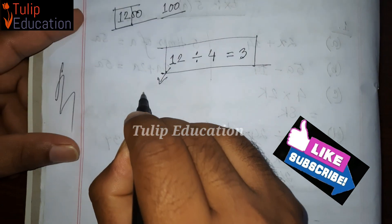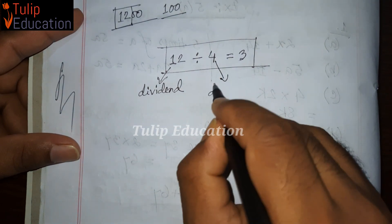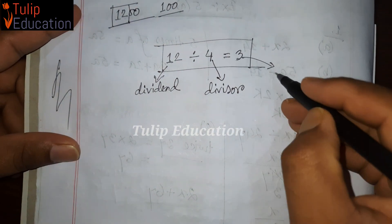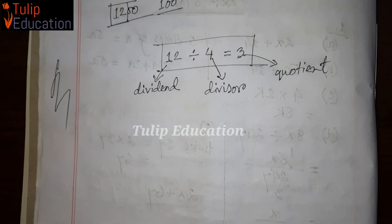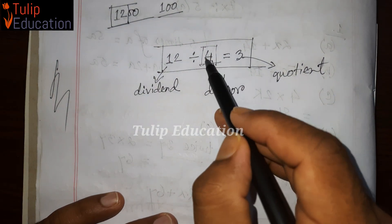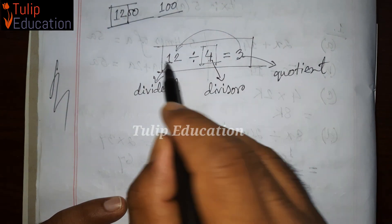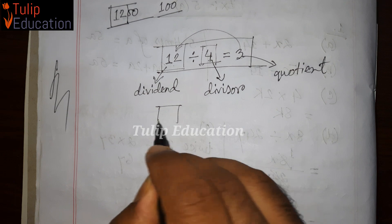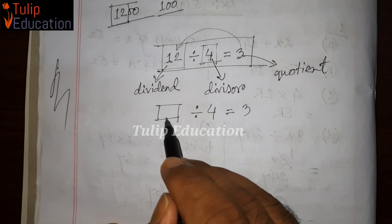Let's discuss division terminology. The number we divide is called the dividend, and the number we divide by is called the divisor. The result we get from dividing is called the quotient. For example, if we divide 12 by 3 we get 4, and if we divide 12 by 4 we get 3.